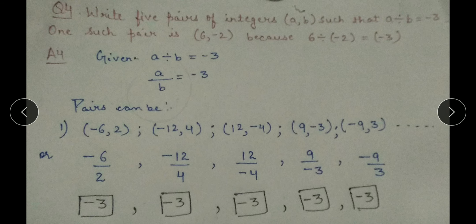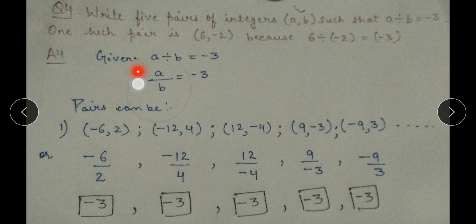Question number 4: Write 5 pairs of integers. We need to take 5 pairs, and in each pair there are 2 integers, a and b, such that a divided by b equals minus 3. One such pair is already given: (6, minus 2), because 6 divided by minus 2 equals minus 3. Now we need to find the other pairs.